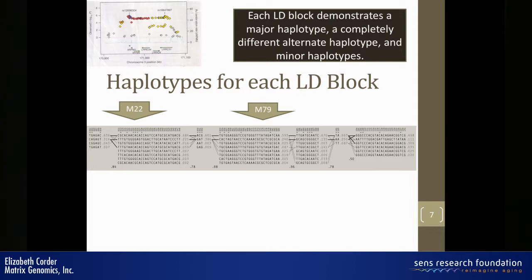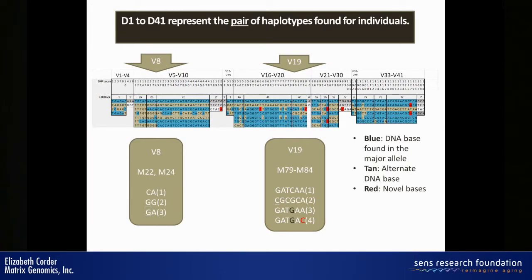In fact, for LD block one, the common allele — the major allele — is the same as the alternate allele, but just in reverse direction. So the challenge is how to represent all this variation in a limited number of variables having a limited number of outcomes.